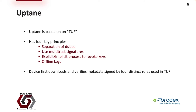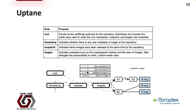Before the device even begins to download the update itself, it first downloads and verifies metadata signed by usually four distinct roles used in TUF. The root serves as a certificate authority for the repository, responsible for distributing and revoking public keys used to verify itself and the other three roles. The timestamp role indicates if any new metadata or update is available. The snapshot role notifies devices of available updates at the time defined by the metadata signed by the timestamp role. Finally, the target role provides metadata associated with the update itself, such as hashes and file sizes.